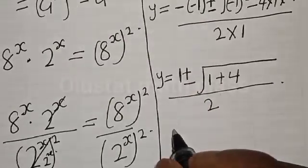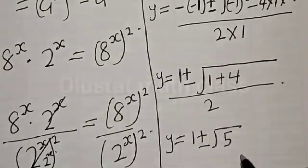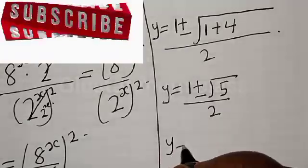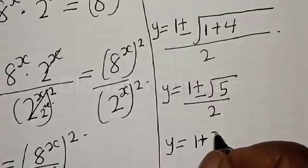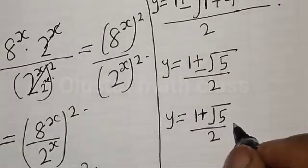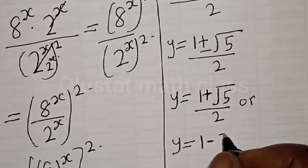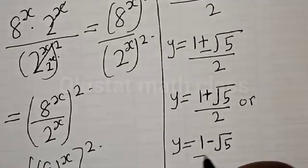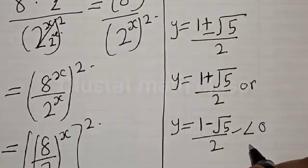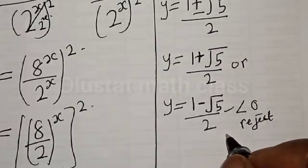Then y is equal to 1 plus or minus square root of 1 plus 4, divided by 2. Therefore y is equal to 1 plus or minus square root of 5, divided by 2. Or y is equal to 1 minus square root of 5, divided by 2. But for this case, this value is less than 0, so we reject it and conclude there is no solution from this branch.